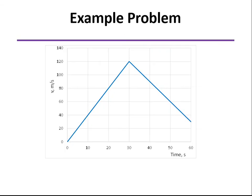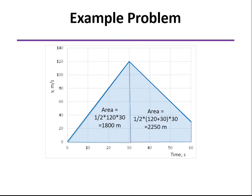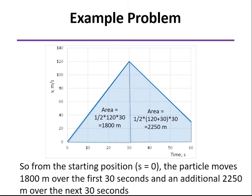Now, if we look at the areas under the curve here, that first triangular region gives us 1,800, and again, the units, meters per second times second, gives us units of position, in this case meters. And this trapezoidal area, by taking the average velocity, multiplying it by 30 seconds, 2,250 meters.